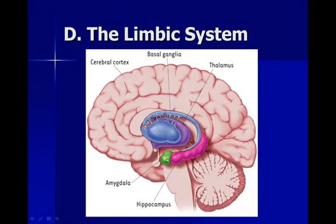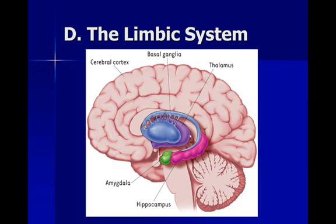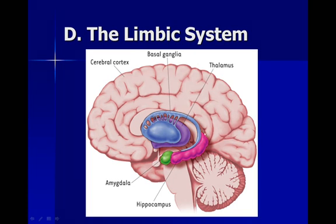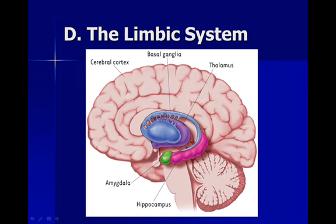We have the brainstem and cerebellum at the very bottom, and we're going to work our way up to what's called the limbic system, which is an incredibly important part of our functioning. The limbic system includes the amygdala, which is an almond-shaped structure — 'amygdala' means almond. It also includes the hippocampus, the thalamus, and the basal ganglia. The hippocampus is critical for memory formation, the basal ganglia are critical for motor functioning, the amygdala is for emotion, and the thalamus is the sensory switchboard.